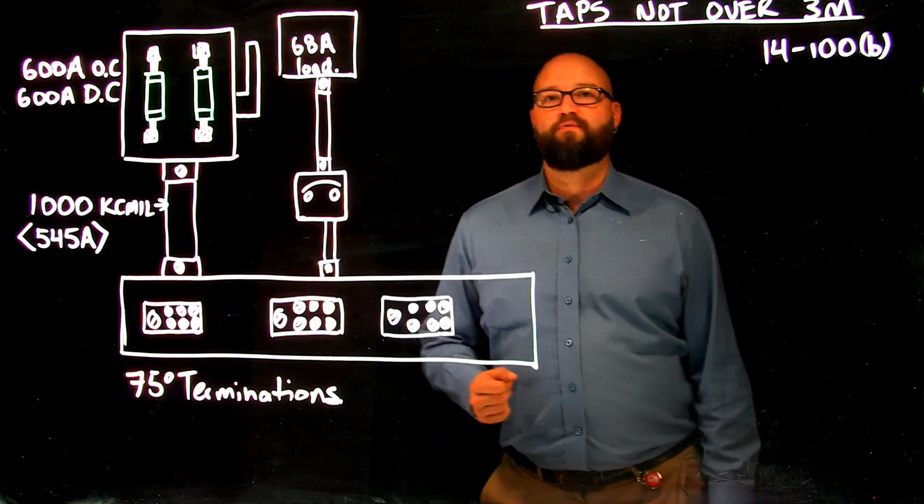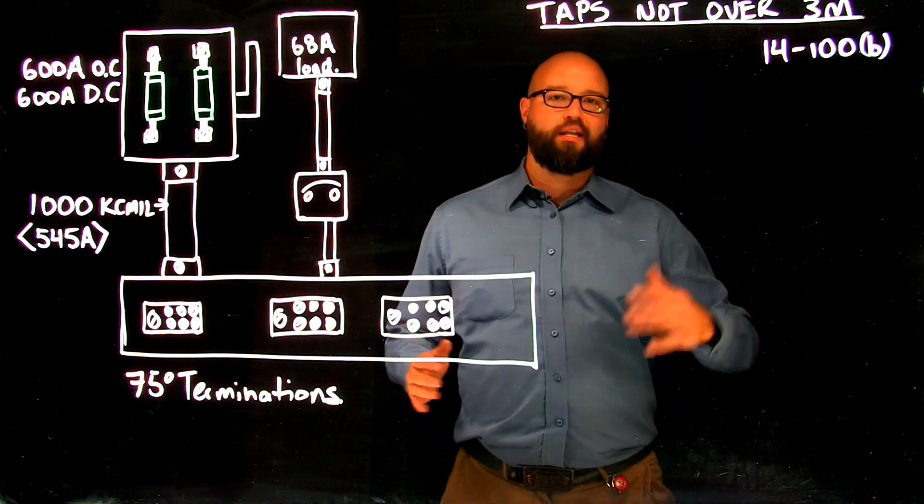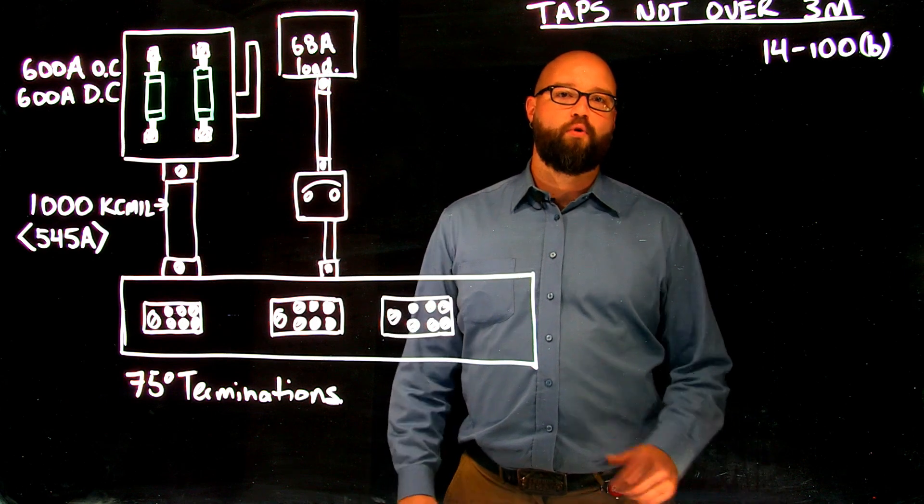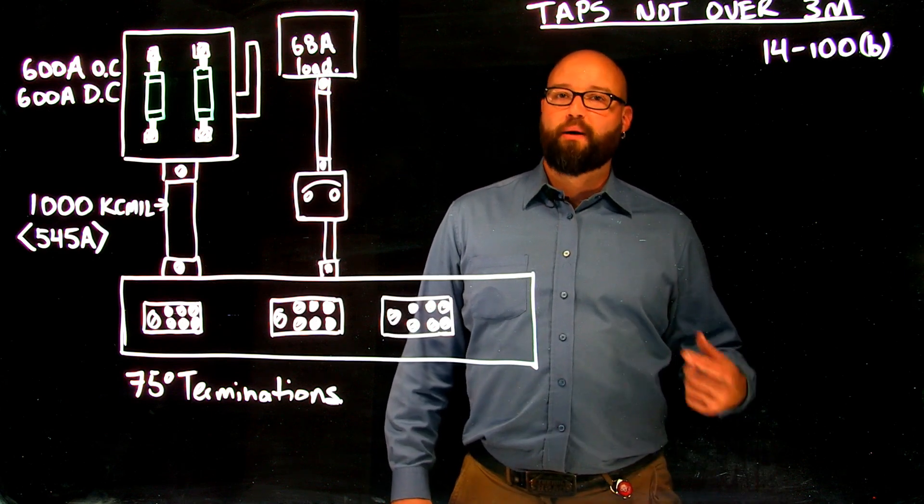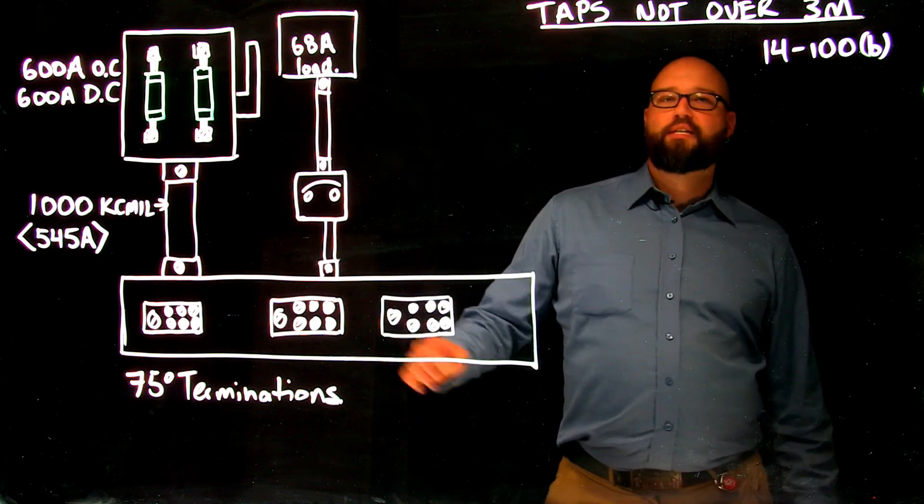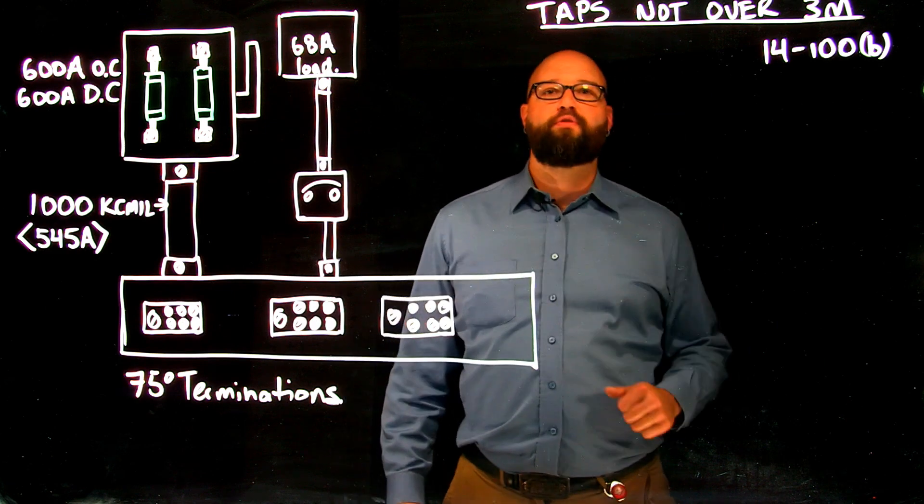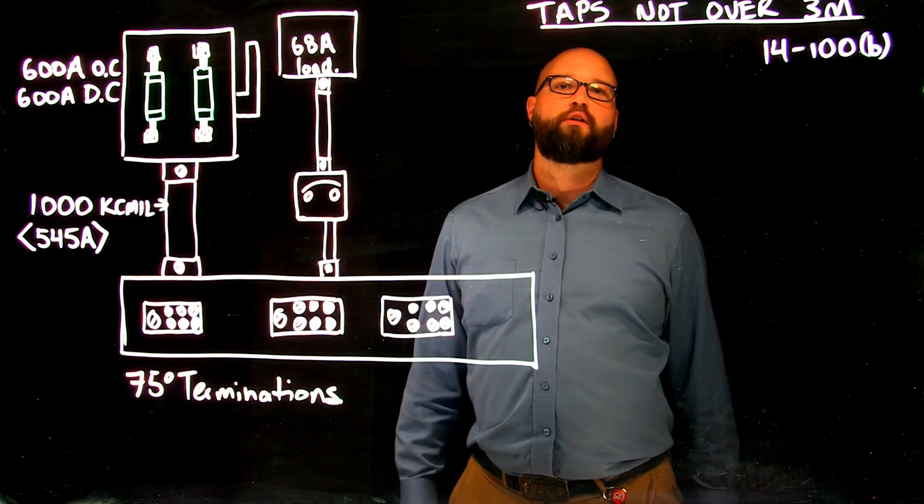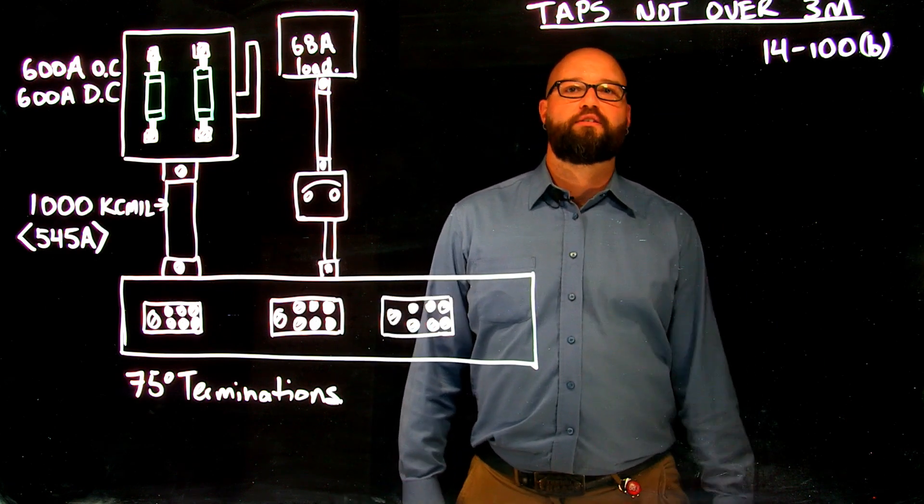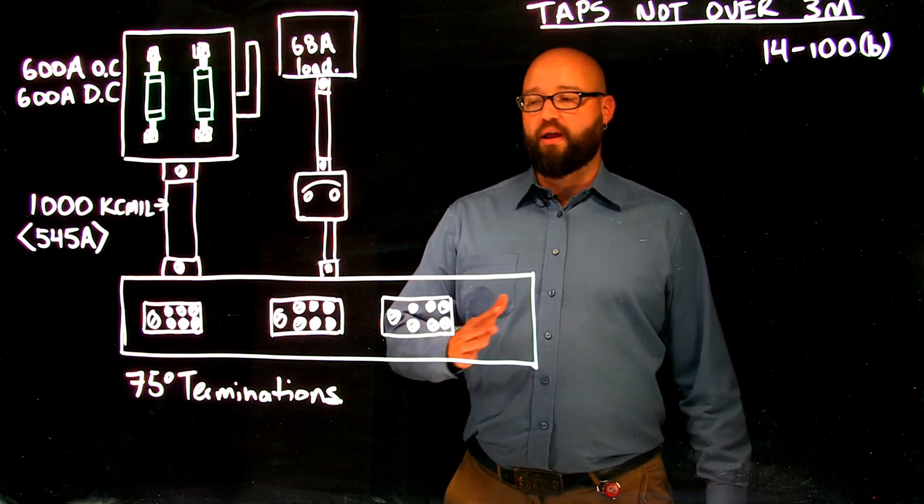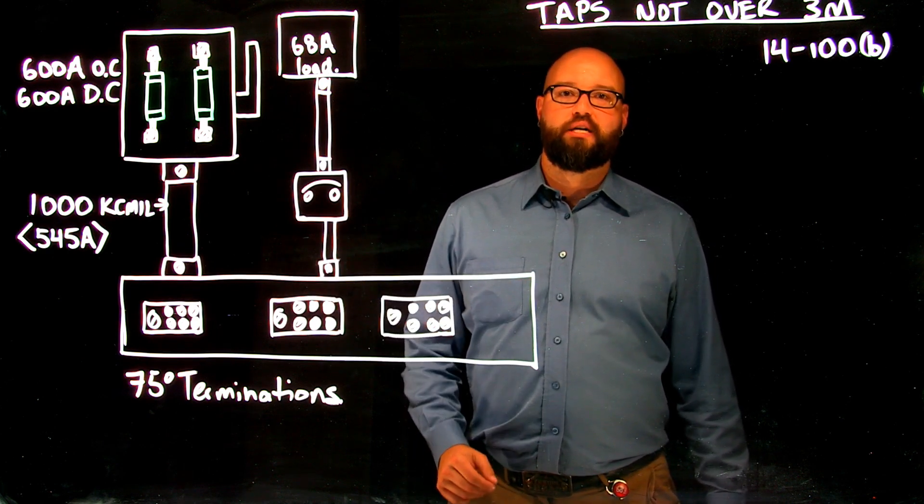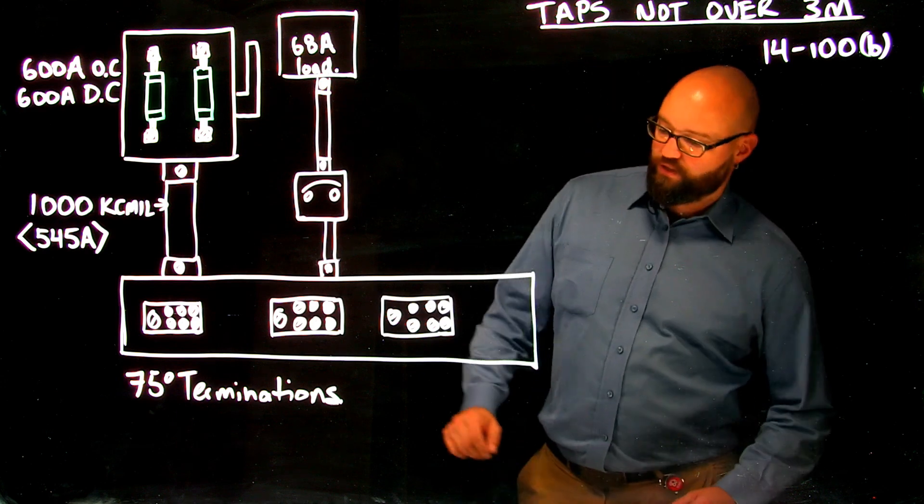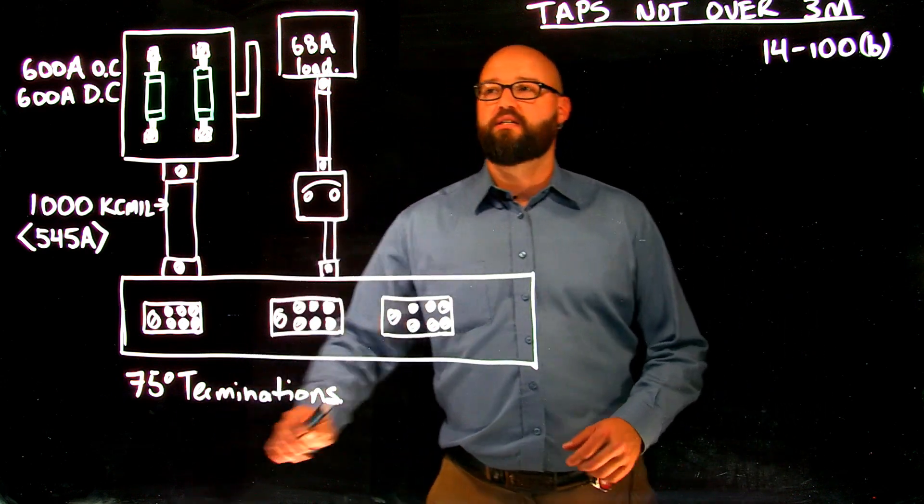In the previous video, we talked about 14100A where we have that allowable downsize in the conductor for a voltage drop type of application. This one here, what we're going to take a look at is taps not over three meters. So that is up to and including a tap conductor that is three meters in length and why and where we're allowed to downsize that conductor.